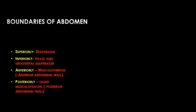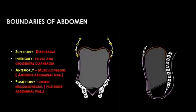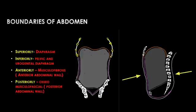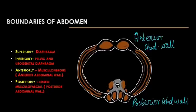The boundaries of the abdomen are: a roof, floor, anterior wall, and posterior wall. The roof is formed by the diaphragm, which separates it from the thoracic cavity. The floor is formed by the pelvic and urogenital diaphragm. The anterior wall is musculofibrous in nature, formed by the external oblique, internal oblique, transverse abdominus, and rectus abdominus muscles with their aponeurosis. The posterior wall is osseomusculofascial in nature, bounded by the vertebra, muscles, and their aponeurotic parts.